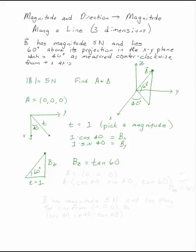So for the magnitude of 1 that I picked arbitrarily for my projection in the plane, the point up here connected to it is going to be cosine 40, sine 40, tan 60.